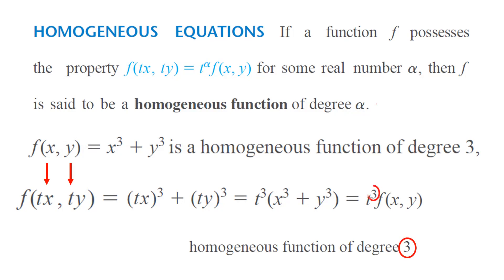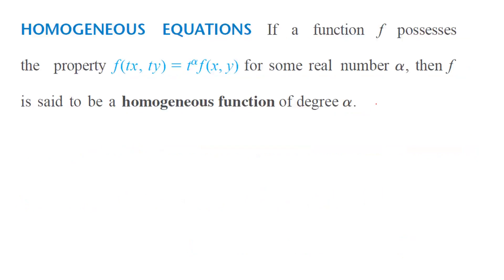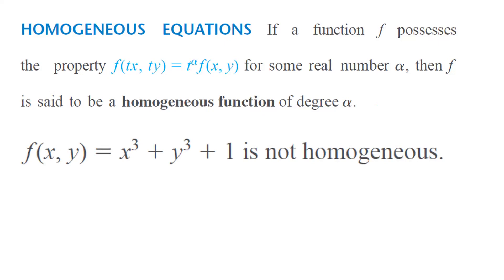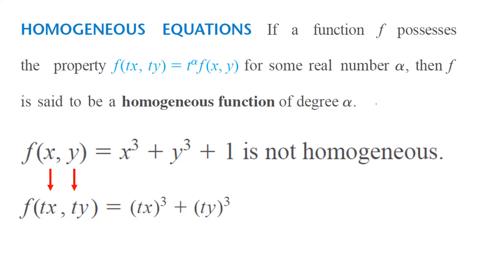The degree is three because t has exponent three. Now consider an example that is not homogeneous: f of x and y equals x cubed plus y cubed plus a constant like one. Substituting gives tx cubed plus ty cubed plus one. Since the constant one has no t factor, you cannot factor t out of all terms, so this is a non-homogeneous function.